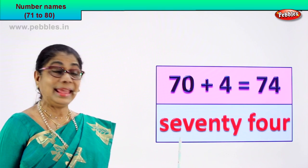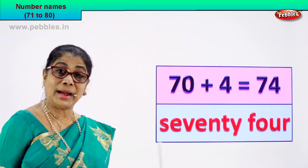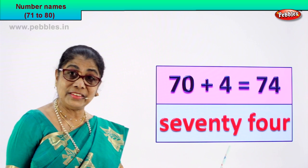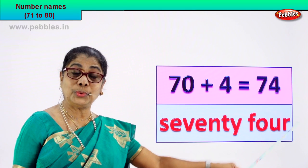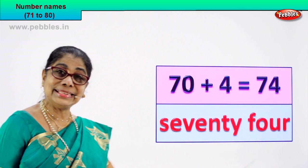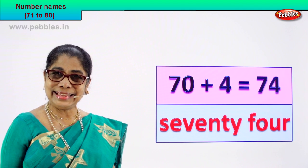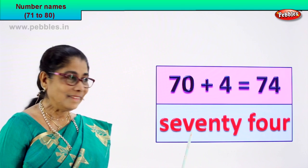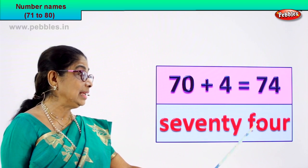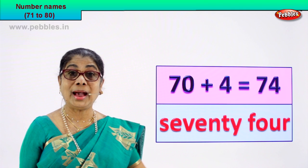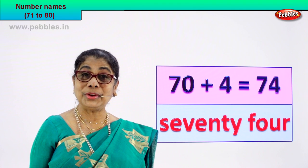Spell: s-e-v-e-n-t-y — 70, then f-o-u-r. So the numeral and its name — you learn to spell and write. Yes: s-e-v-e-n-t-y, f-o-u-r — 74. Good. Are you enjoying? Shall we go to our next number?